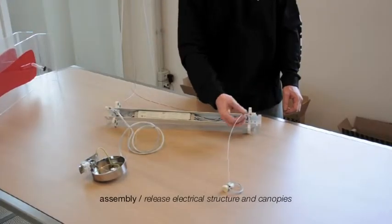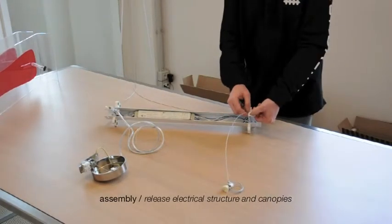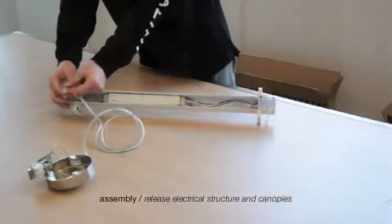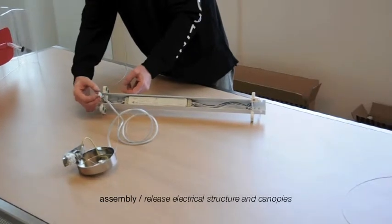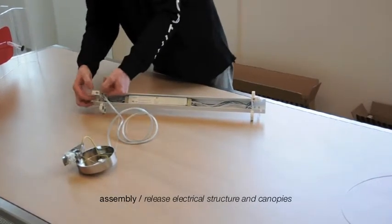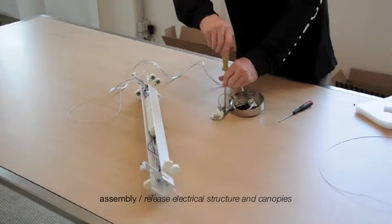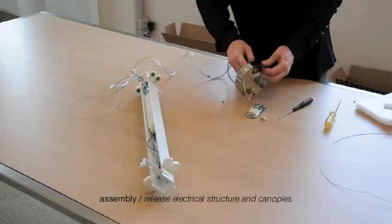Before proceeding with the lamp assembly, it's necessary to release the electrical fitting from the canopies. Free the steel wires, unscrewing the safety nuts and pressing the spring clumps. Disconnect the electric cable from the connector and get the clover plate unfreed.